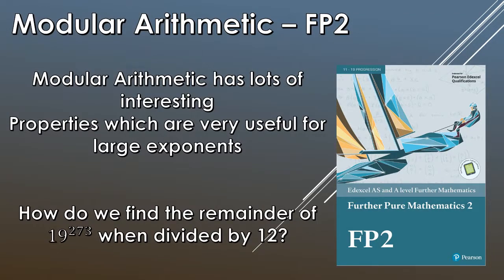Welcome back. Today we're moving on to the next part of the number theory chapter, which is on modular arithmetic. Modular arithmetic looks at finding remainders. It has a lot of interesting properties and is very useful when dealing with large powers. It answers questions such as: how do we find the remainder of 19 to the power of 273 when divided by 12? We can answer those questions using modular arithmetic.